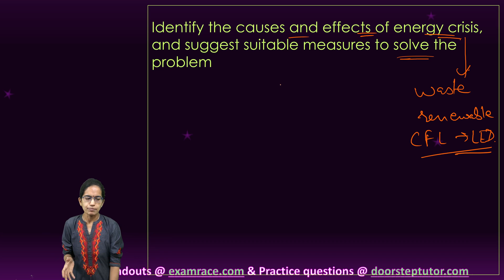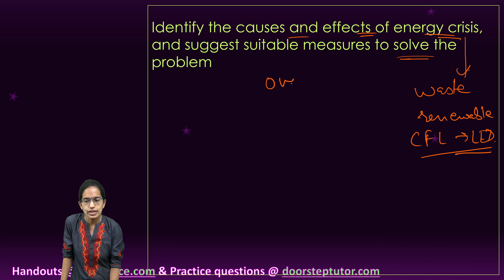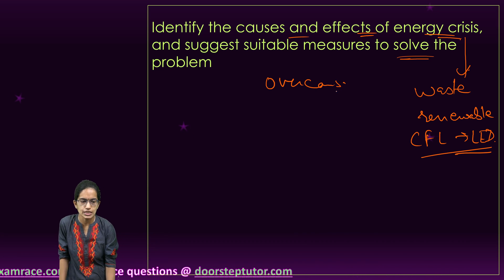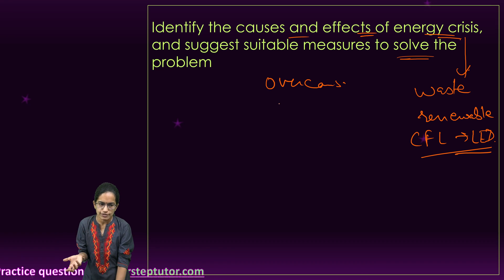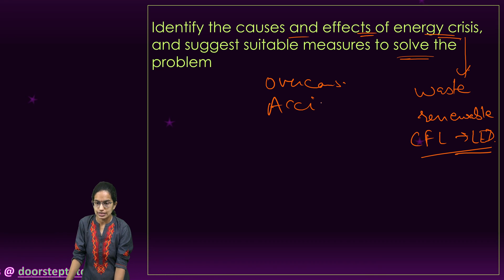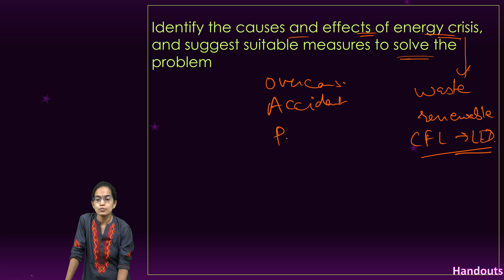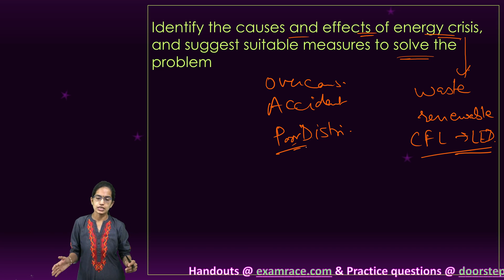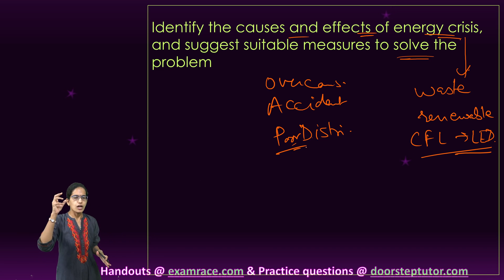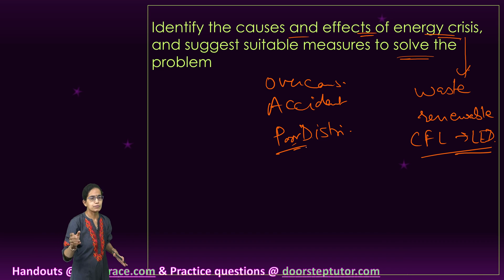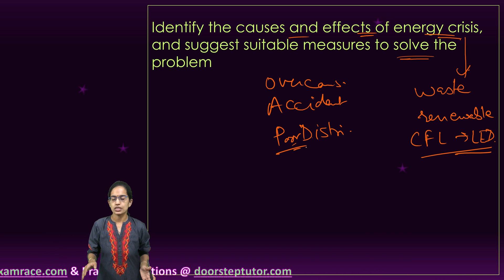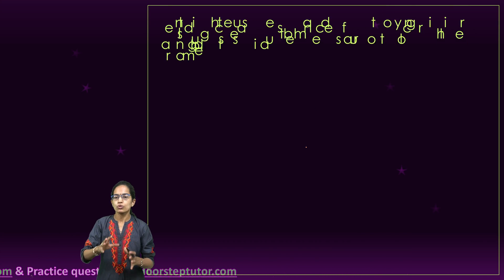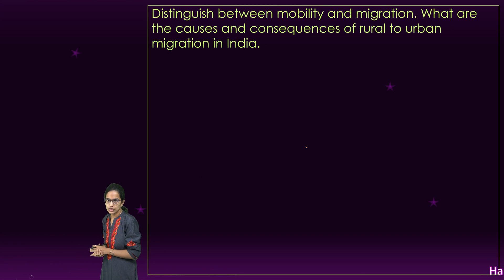We also focus on the causes of the energy crisis. Causes can be explained as over-consumption, misuse, wastage, poor infrastructure, major accidents causing wastage, poor distribution system — the distribution system is not streamlined and there has been a lot of wastage in distribution grids — along with wars, attacks, instability, and internal conflicts as contributing reasons. Those are some of the major points to discuss.